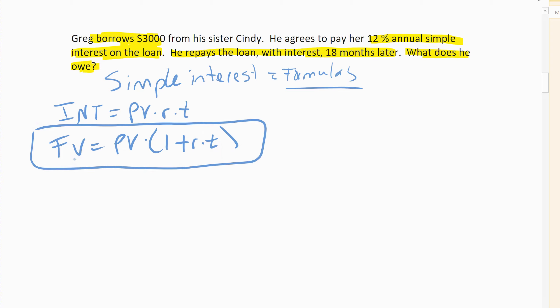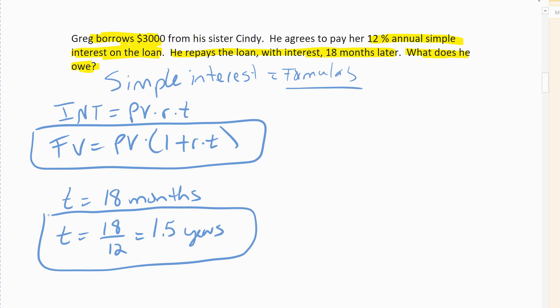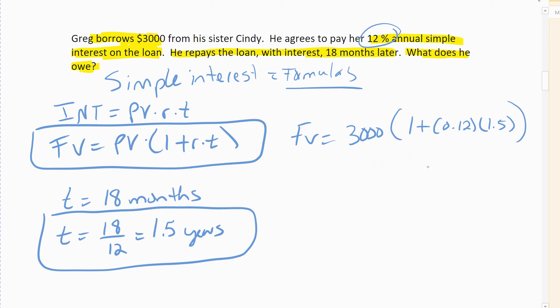We want to figure out how much will he owe his sister back in 18 months. Remember, time is always in years, so when I have months I always have to convert that to years. I take my 18 divided by 12 to get my years. You can type it in as 18 over 12, or you can simplify it - it does simplify to one and a half years, 1.5 years. It's up to you however you want to type it in, but you do have to change it to years. Now you plug in all your information: future value is what we're looking for, he borrowed $3,000 so that's his present value, 1 plus our interest rate written as a decimal - .12 - times his 1.5 years. 18 months is 1.5 years.